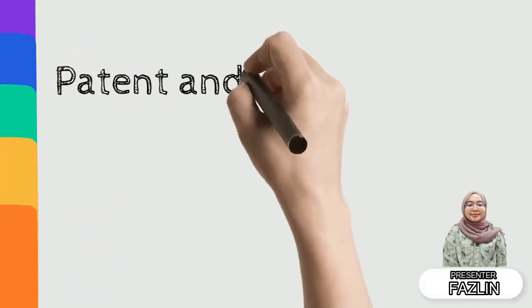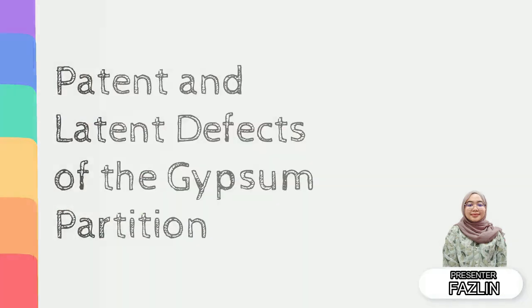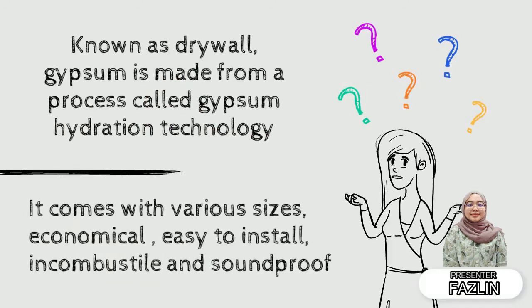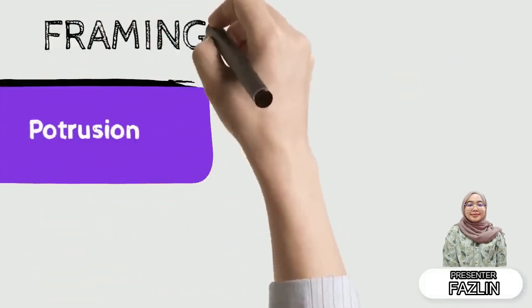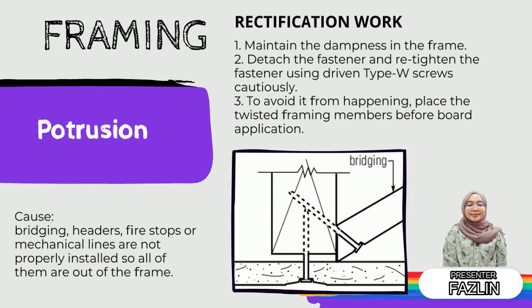Pattern and latent defects on GSM partition. Also known as drywall, GSM partition is made from a process called GSM Hydrogen Technology. One of the defects for framing is protrusion. The reason for this defect is that bridging, headers, fire stops, or mechanical lines are not properly installed, causing them to protrude out of the frame. The rectification work for protrusion is: first, maintain the dampness in the frame; detach the fastener and retighten it using a driver type W-screw. To prevent recurrence, place the twisted framing members before board application.